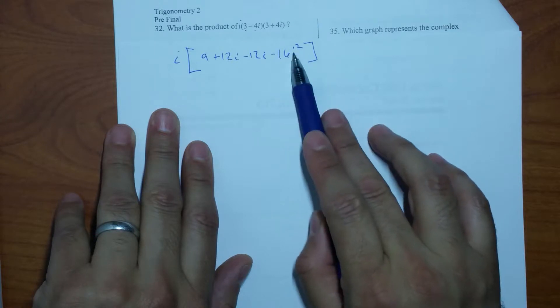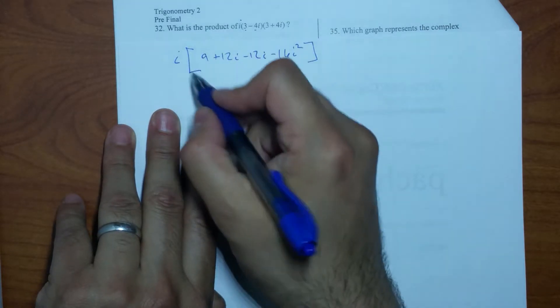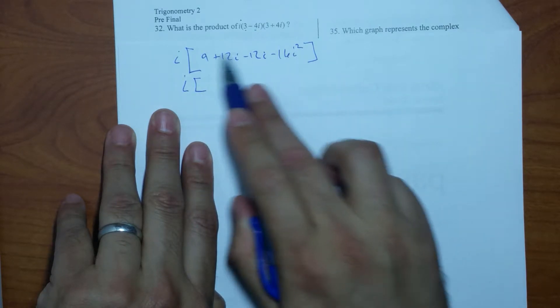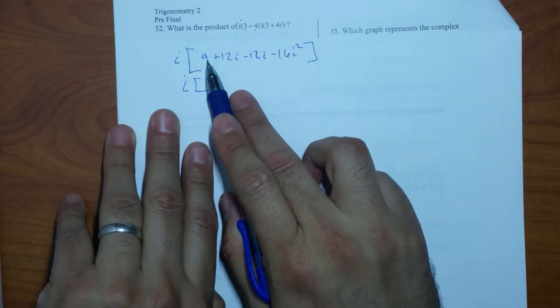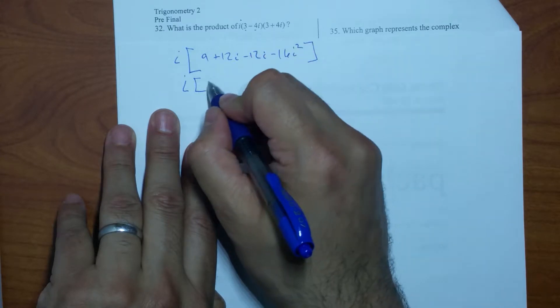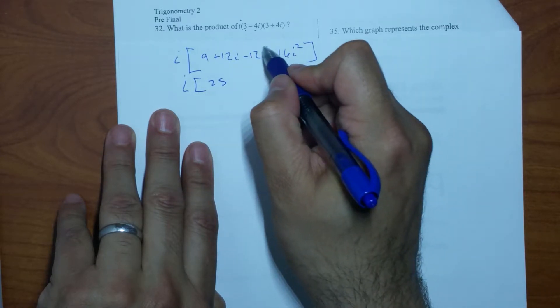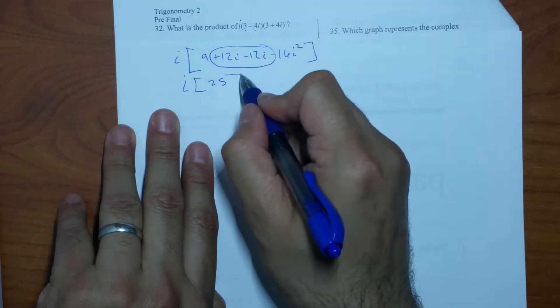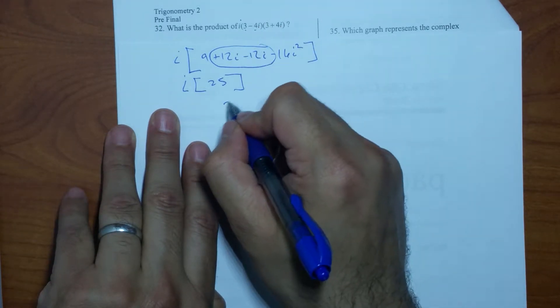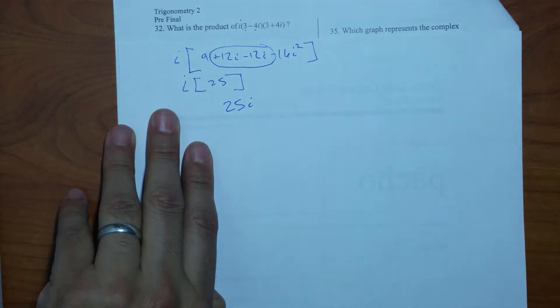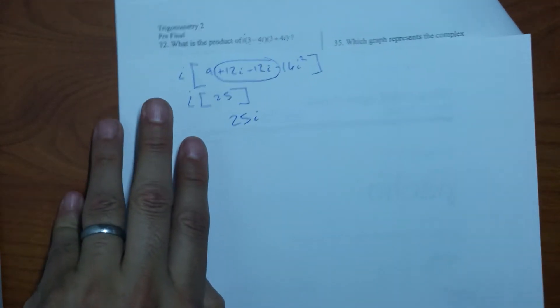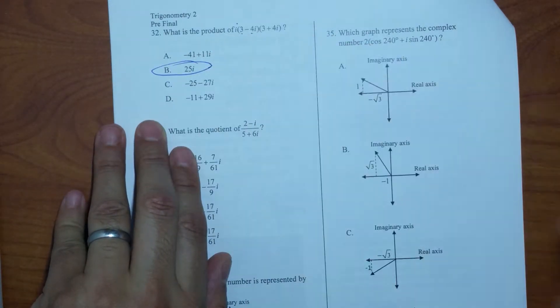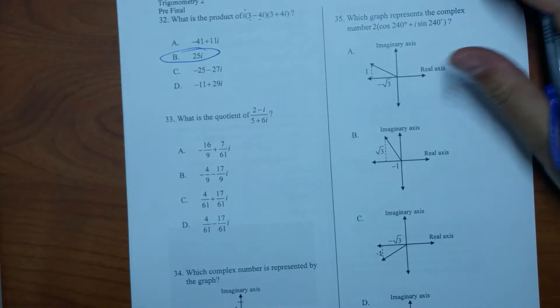Very good. Now i squared gives me what? Negative 1, right? So this is a positive 16. I'm bringing down my i and positive 1, so I have a positive 16 and a positive 9 which gives me 25. And what happens to all of this right here? Those cancel out and go away. So all I have to do is multiply that, so I get 25i as my answer. So that one is B.